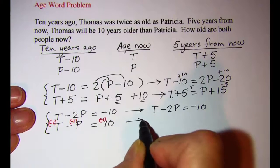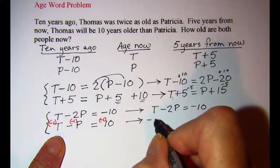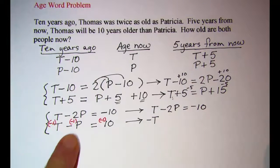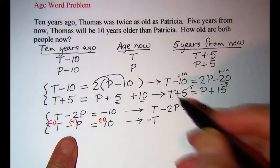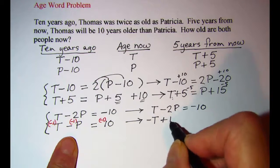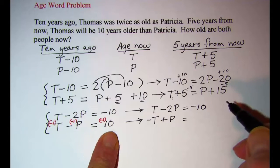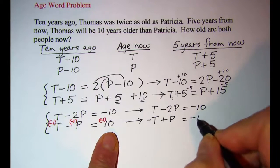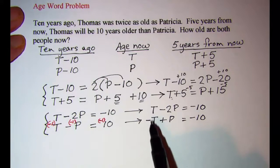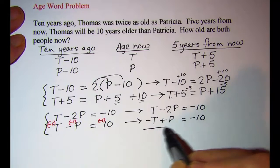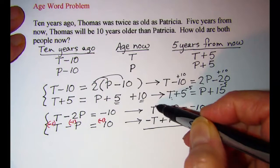And then we copy these, so this one I haven't done anything to that. I have T minus 2P equals negative 10. This one now, negative one times T will give me a negative T. A negative one times a negative P will be a positive P. And then a negative one times ten is negative ten.